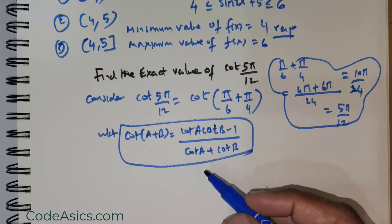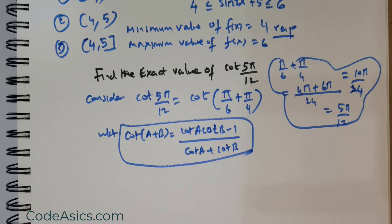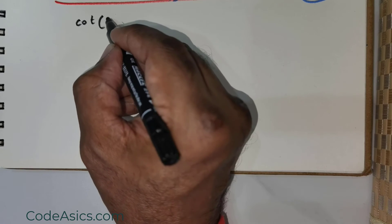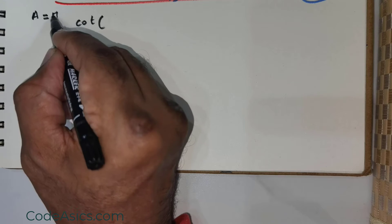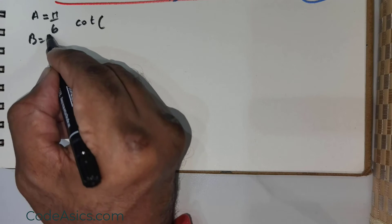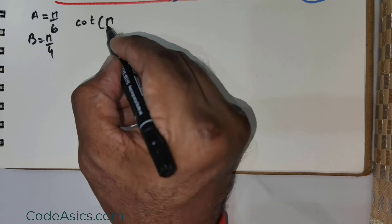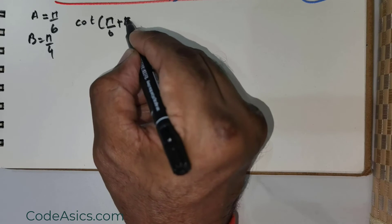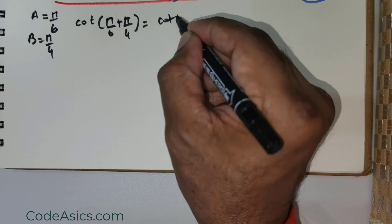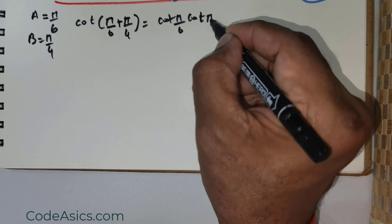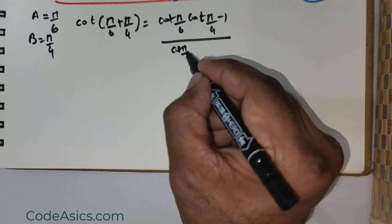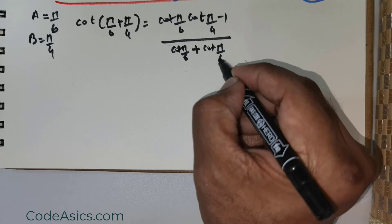Now having mentioned this, let me move on. So cot(A + B), I would take the value for A to be π/6 and the value for B to be π/4. So we got cot(π/6 + π/4), which is equal to (cot(π/6) × cot(π/4) - 1)/(cot(π/6) + cot(π/4)).